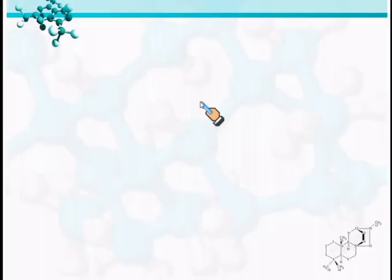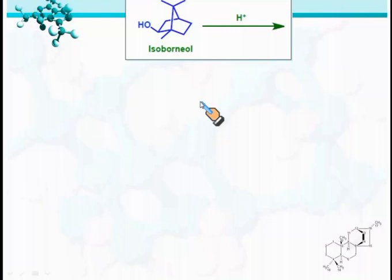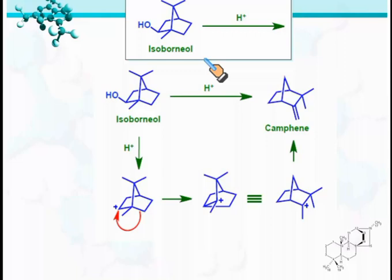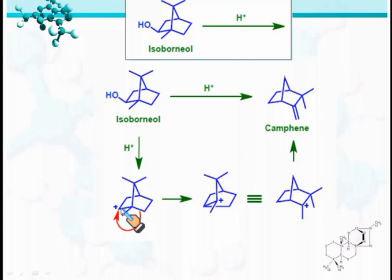When isoborneol is treated with acid, it forms camphene. The reaction mechanism is: first, the OH group undergoes protonation followed by loss of water molecule, generating a carbocation. Then this bond migrates to the electron-deficient carbon, generating a relatively more stable tertiary carbocation, represented in simplified form. Then loss of a proton from this carbon generates camphene.